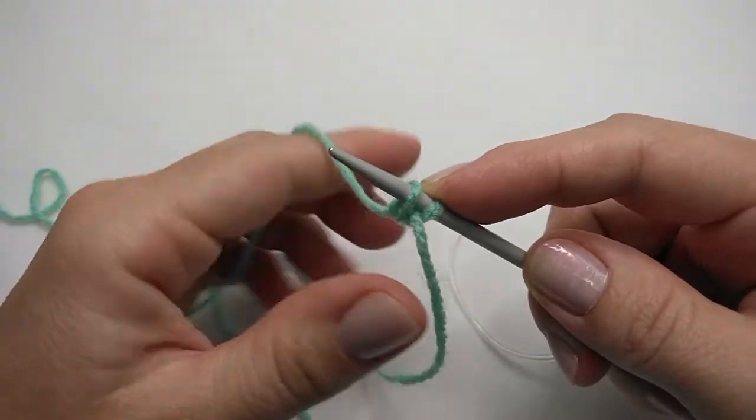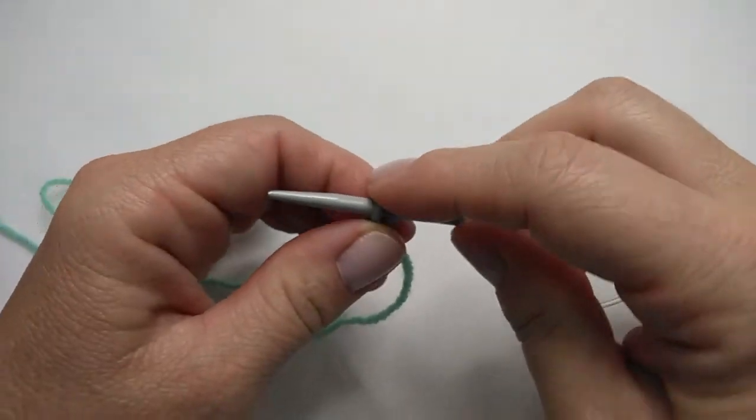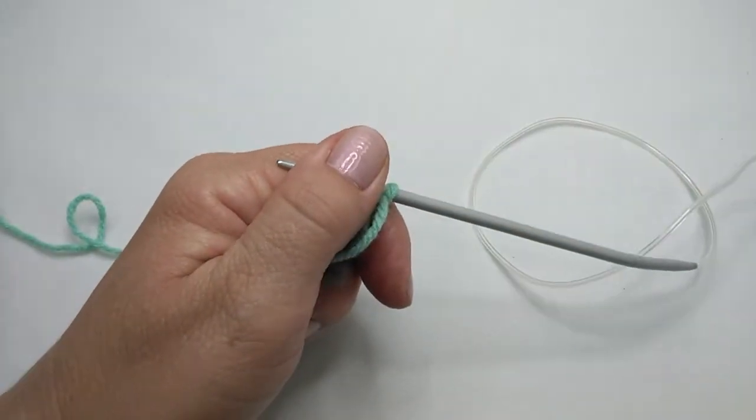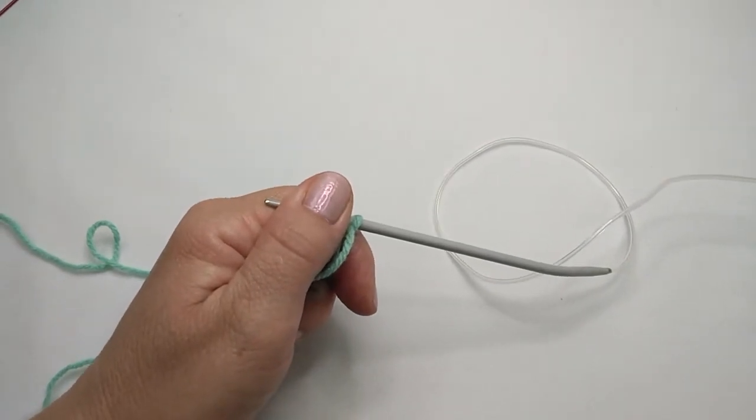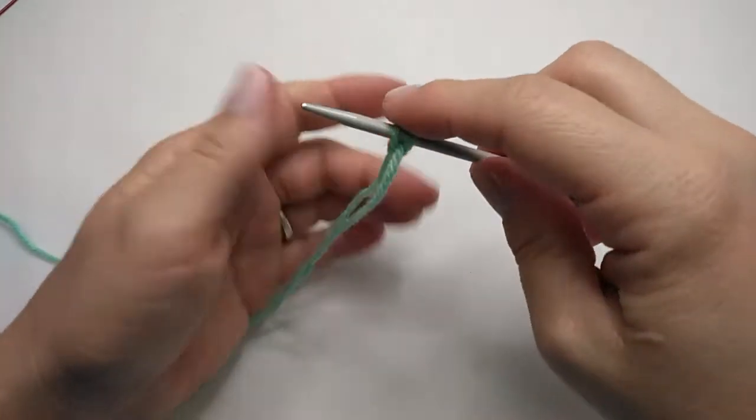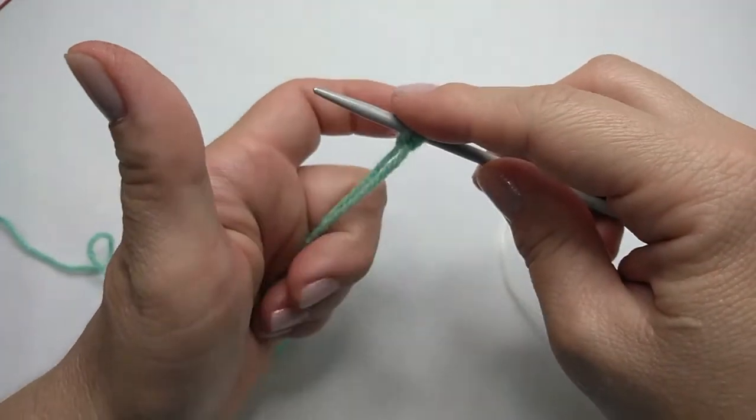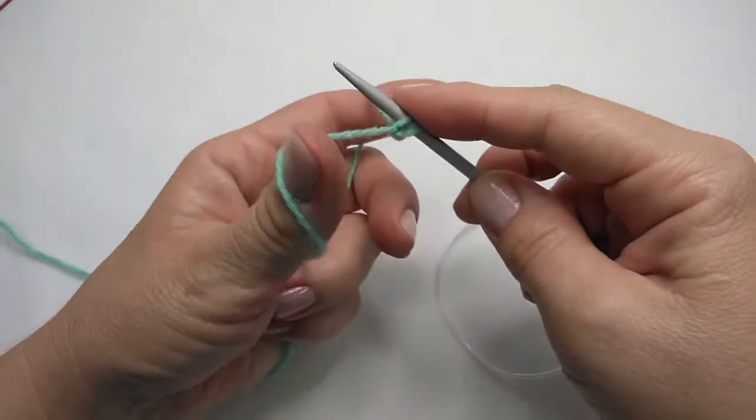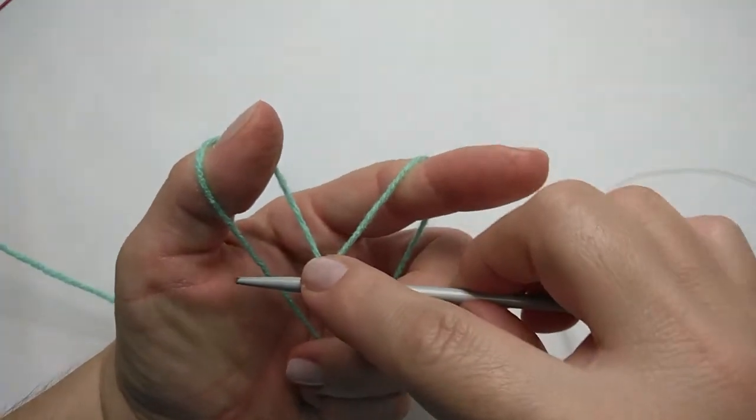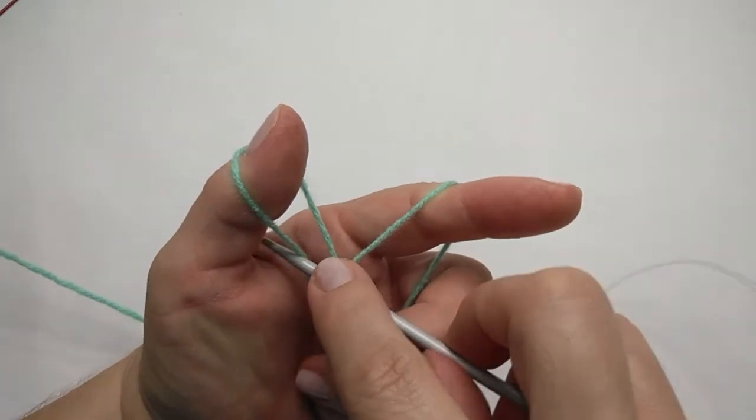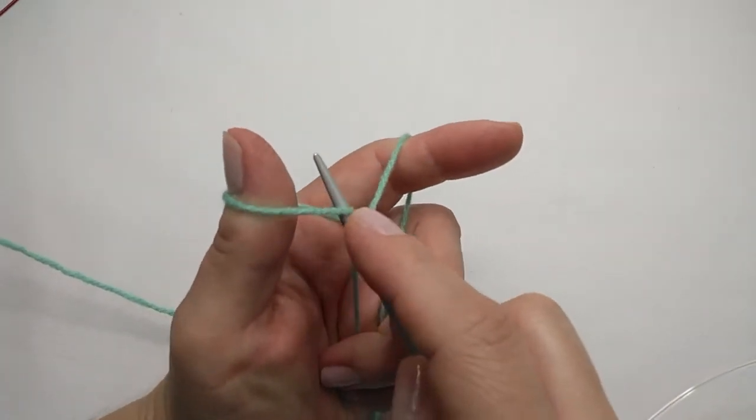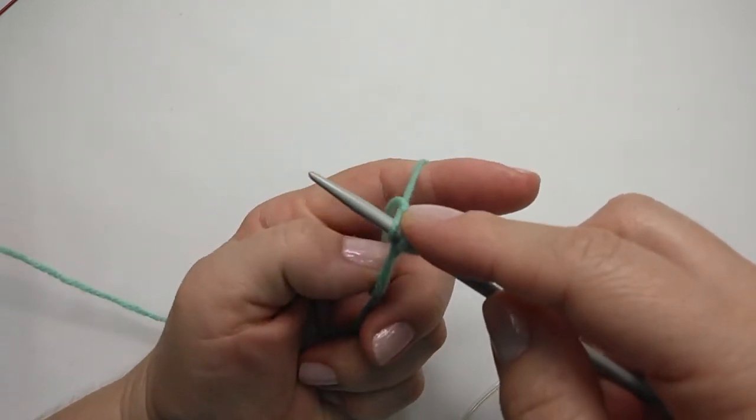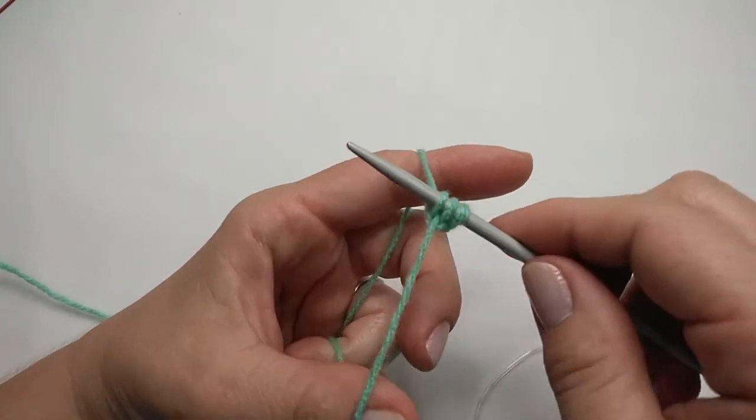So let's just do that again. We grab both strands with our three fingers, split the yarn with our index finger and thumb, bring the needle down so that you can see the strands properly, go underneath the first strand on the thumb, grab the yarn on your index finger, pull it through the loop on the thumb, drop the loop off and pull it tight.